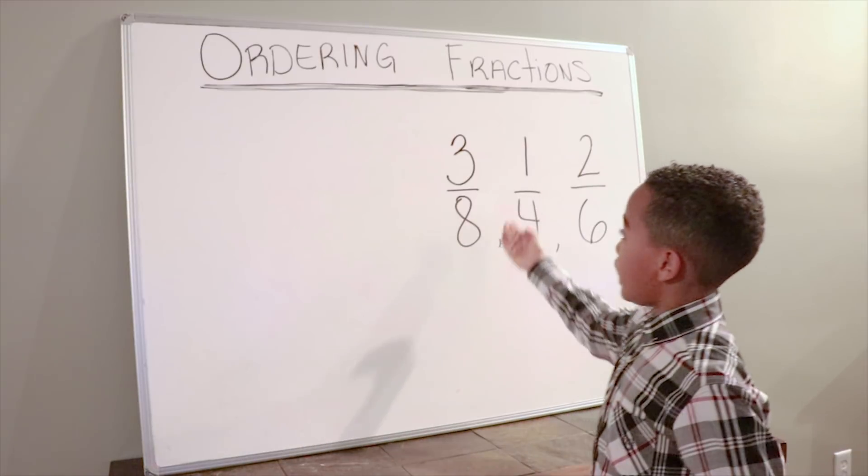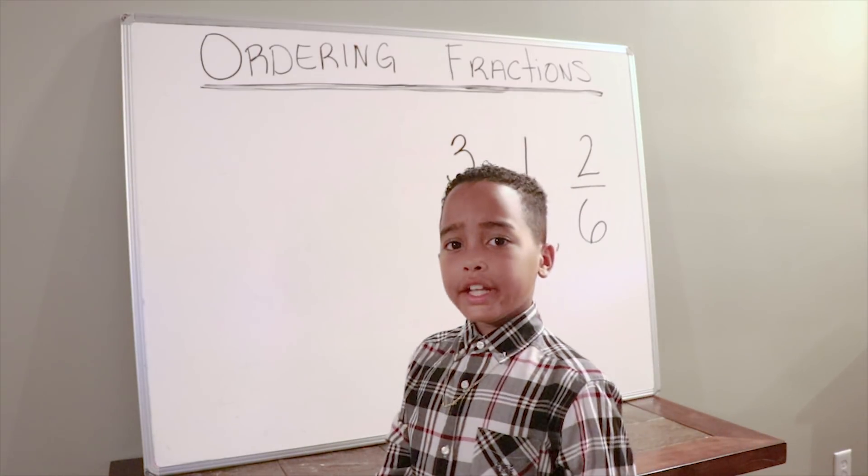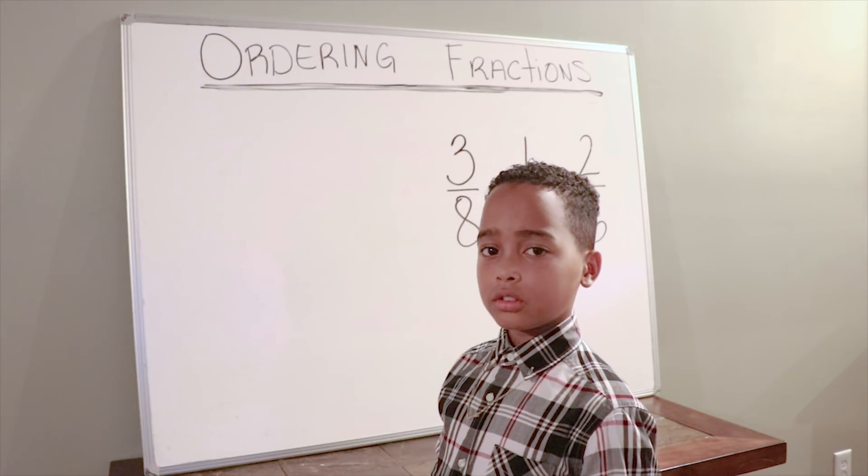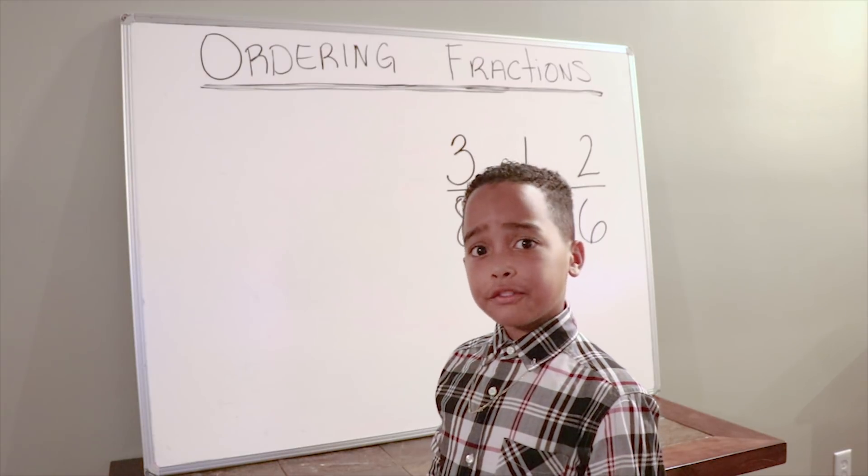We're going to be ordering 3 eighths, 1 fourth, and 2 sixths. It's easy to tell how to order fractions when we have the same denominators, but today we're going to be working on how to order fractions when we have different denominators.